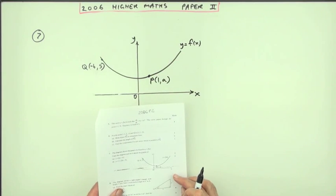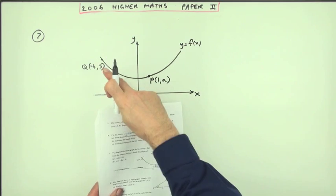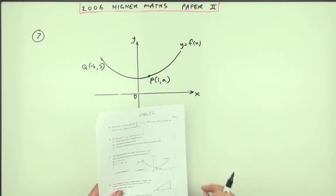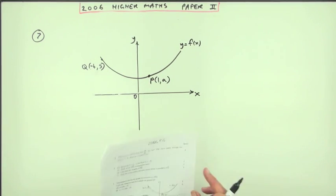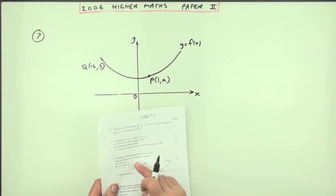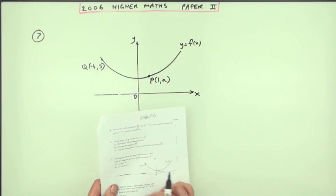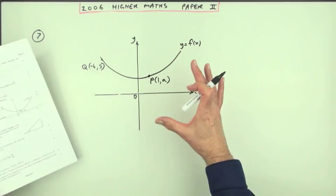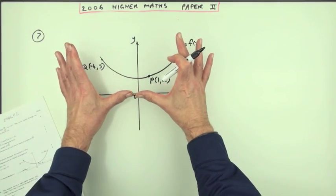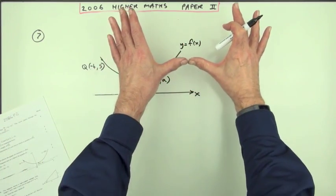Number seven from the 2006 Higher Maths Paper 2. You're given a sketch of the graph of a certain function and you have to sketch the graphs of certain transformations of that function. Now these transformations just involve shifts horizontally and vertically, so those could be called translations. That's where the shape stays the same but simply slides along to a new position without getting any wider or narrower.